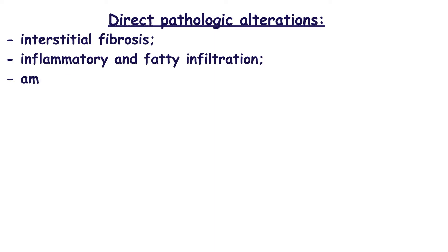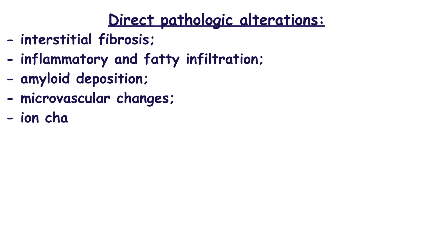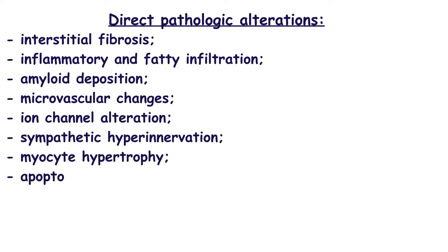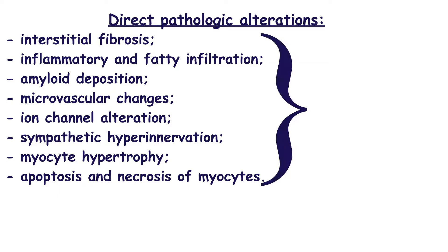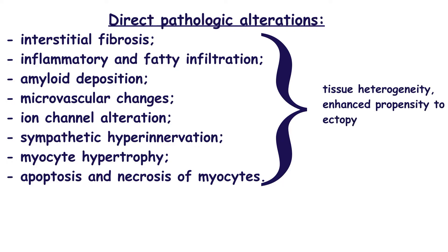Direct pathological alterations include interstitial fibrosis, inflammatory and fatty infiltration, amyloid deposition, microvascular changes, ion channel alteration, sympathetic hyperinnervation, myocyte hypertrophy, apoptosis and necrosis of myocytes. These alterations lead to tissue heterogeneity and enhanced propensity to ectopy.